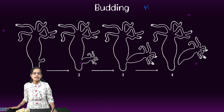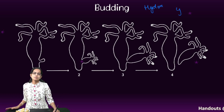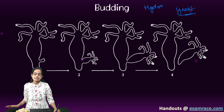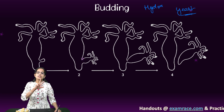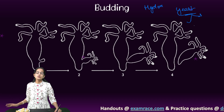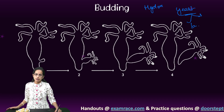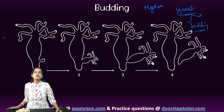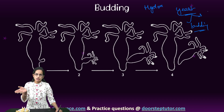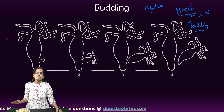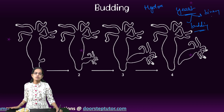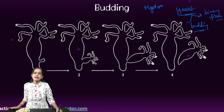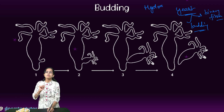The two common species for budding are hydra and yeast. Yeast reproduces by two mechanisms: budding, which we are discussing right now, and binary fission, where simple cloning produces two identical cells.